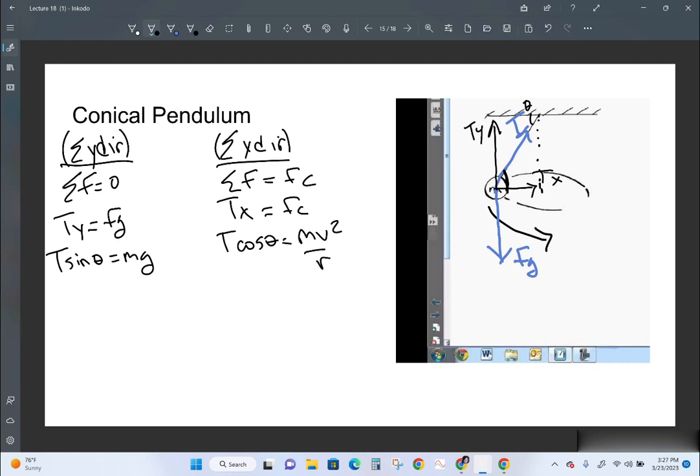So let's give it some numbers. Let's say that this mass is a 10 kilogram mass, and let's say that it's hanging on a string of length 1 meter, and let's say that the angle that it makes with the ceiling is 30 degrees.